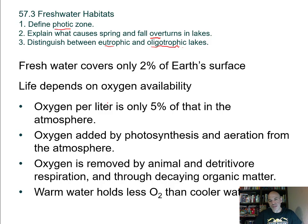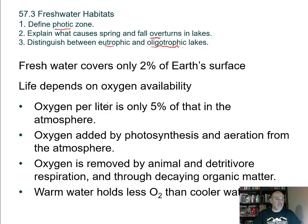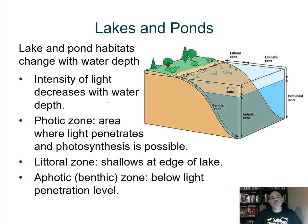Oxygen is removed from water by cell respiration in animals, plants, detritivores, and bacteria and fungi decomposing organic matter. Importantly, cooler water can hold more dissolved oxygen — as temperature increases, the amount of gas that can dissolve decreases. A lake or pond habitat changes with depth due to different physical conditions: availability of light, whether the water is shallow enough for rooted vegetation, and so on.